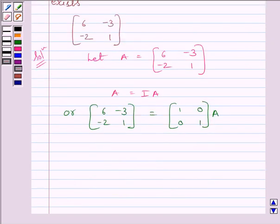Now, we will apply a sequence of row operations simultaneously on matrix A on the left-hand side and the matrix I on the right-hand side, till we obtain the identity matrix on the left-hand side.